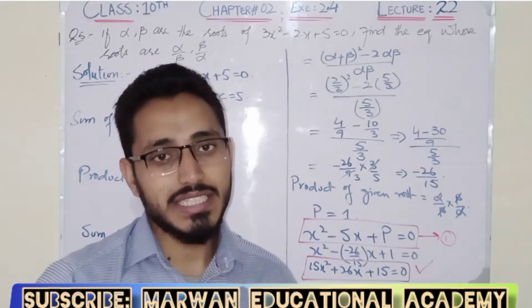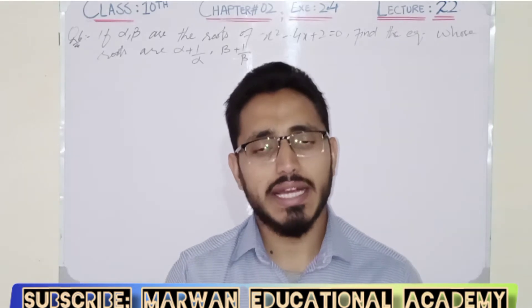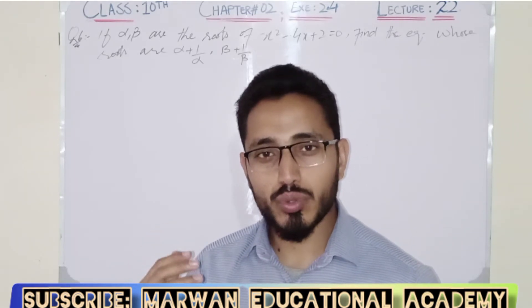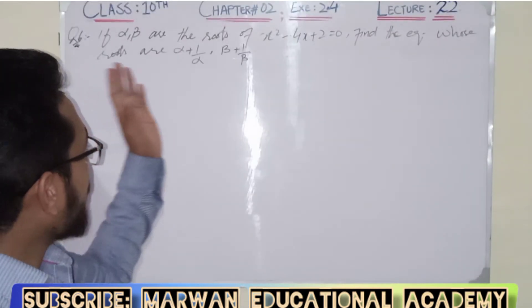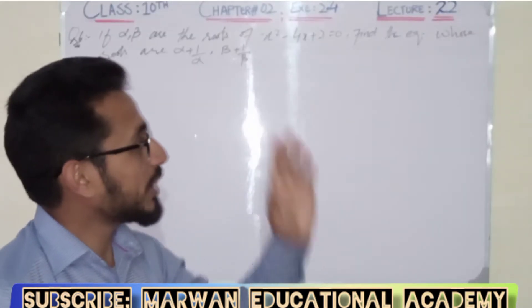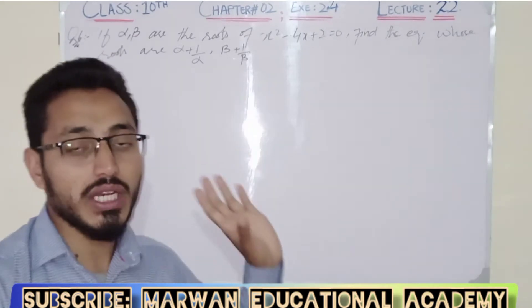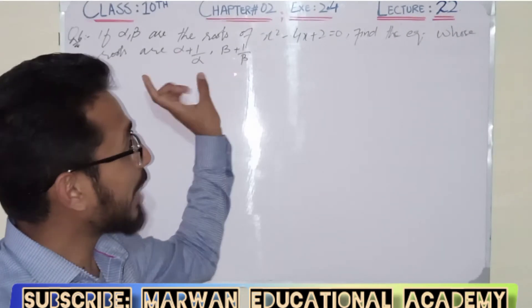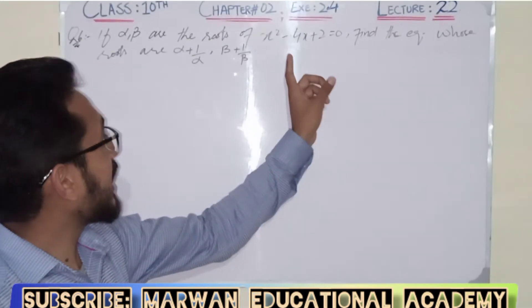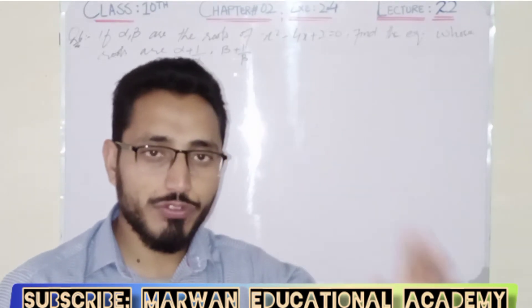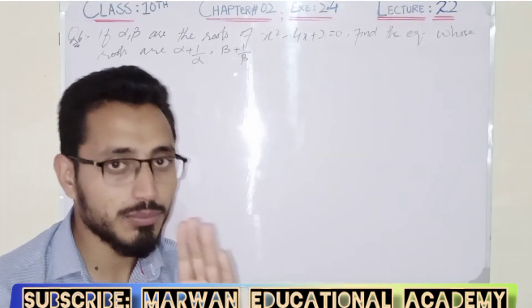Let's start question number 6. Question number 6 is similar to question number 5, but the roots given are slightly different. If alpha and beta are the roots of x squared minus 4x plus 2 equals 0, find the equation whose roots are alpha plus 1 over alpha and beta plus 1 over beta. These two roots are given and we need to find the equation with those roots.